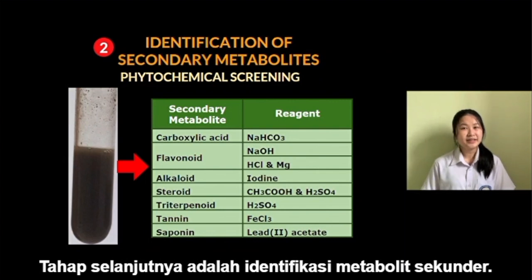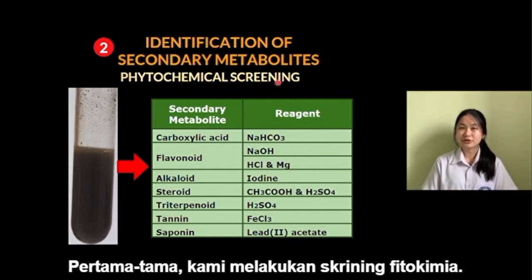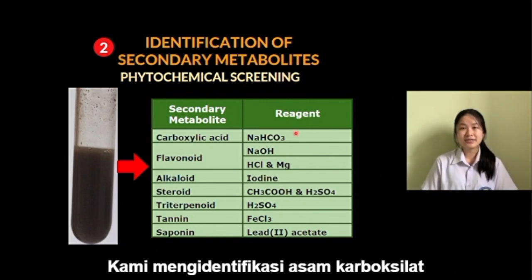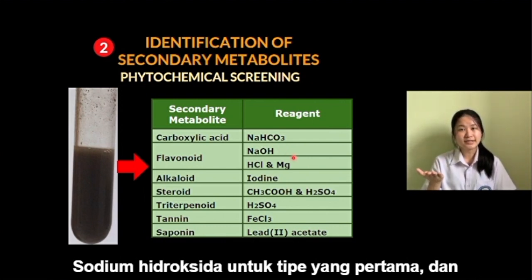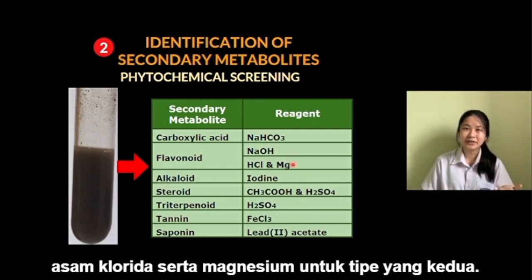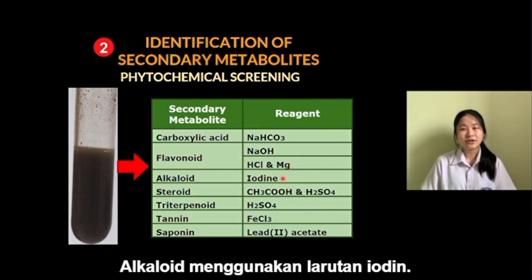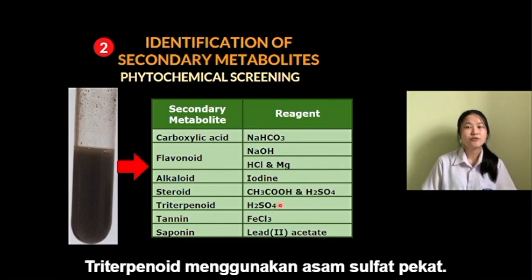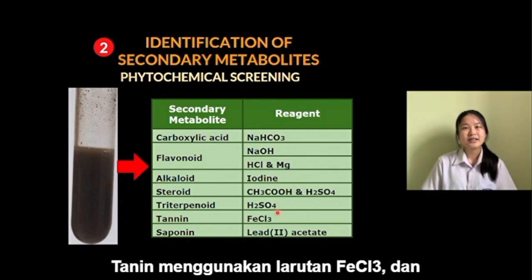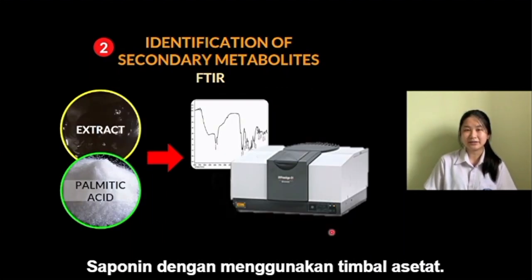The next step is identification of secondary metabolites. First, we did the phytochemical screening. We identified carboxylic acid by adding sodium bicarbonate. Then for flavonoids, we used two types of reagents: sodium hydroxide for the first type, and hydrochloric acid also magnesium for the second. Alkaloid using iodine solution, steroid using acetic acid and sulfuric acid, triterpenoid using concentrated sulfuric acid, tannin using ferric chloride solution, and saponin by using lead acetate.